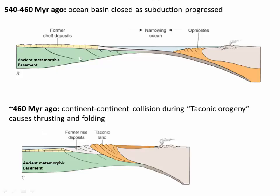Over that time span, what was happening is the ocean basin was closing and North America graded into an oceanic crust that was subducting beneath an encroaching microcontinent. As this subduction happened, this microcontinent drew closer and closer to North America. Eventually, around 460 million years ago, this microcontinent actually collided with North America and we had a continent-continent collision — this is called the Taconic Orogeny.